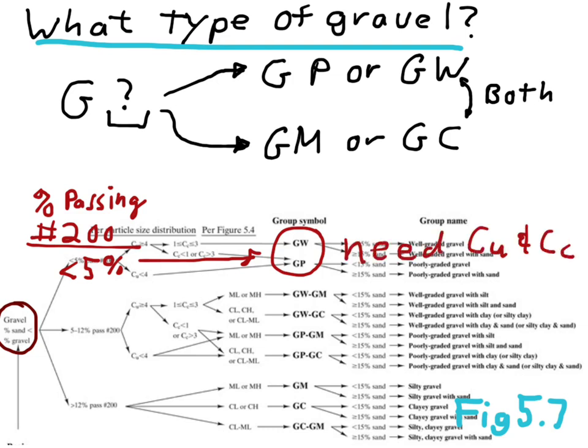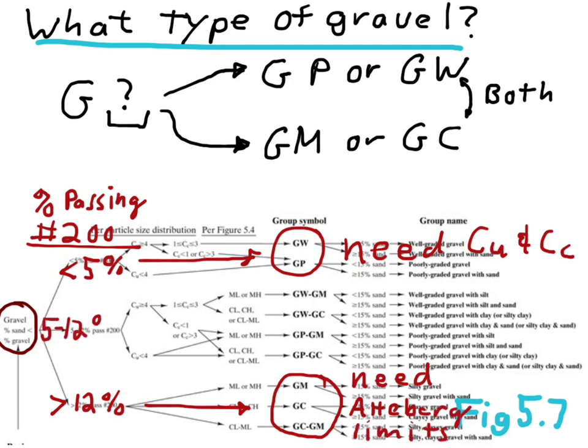And then, in this case, we need to do a grain size distribution and determine both the coefficient of uniformity and the coefficient of concavity, CU and CC. If there's greater than 12% fines, then the soil is going to classify either as a GM, a GC, or a GM-GC. And in this case, we're going to need to know the Atterberg limits. And if it's in between, that is between 5% and 12%, then we're going to have to determine both the grain size distribution curve and the Atterberg limits.